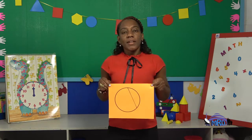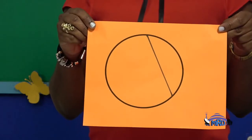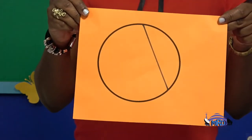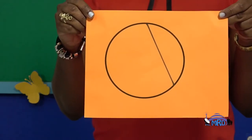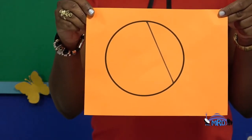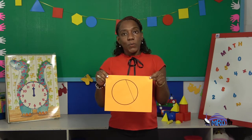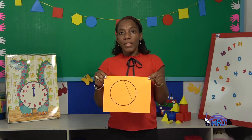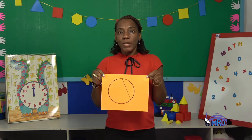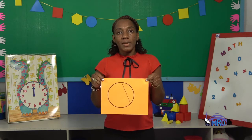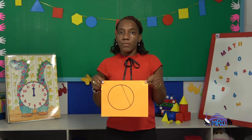Here's another circle. Take your time and look. Are both parts the same? No, they aren't. So this circle is not divided into half.